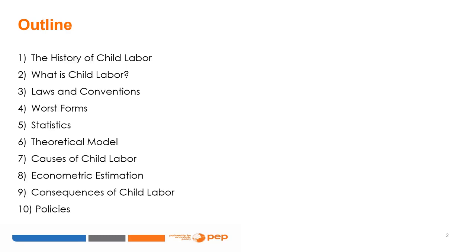This class is structured following Chapter 57 by Eric V. Edmonds, entitled Child Labour, from the Handbook of Development Economics, Volume 4, 2008, but plenty of literature is made available to complement it.